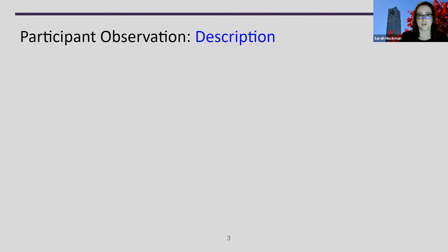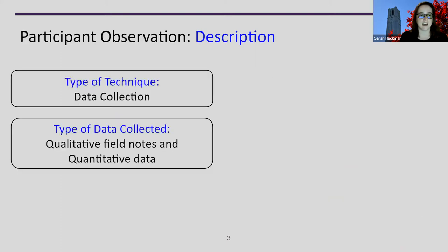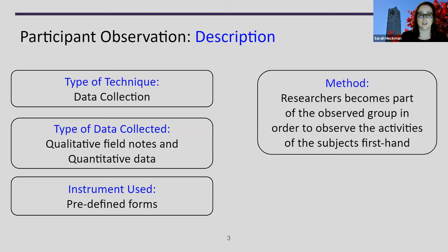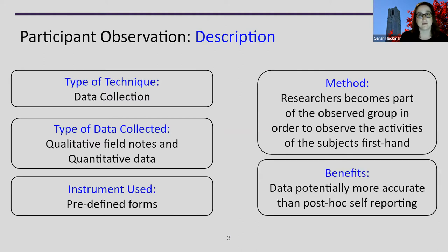We'll start first with participant observation, which is a type of data collection technique where we can collect qualitative field notes and quantitative data. We can use predefined forms to help us with participant observation. Participant observation is when the researcher becomes part of the observed group and can observe the activities that participants are doing firsthand. The benefit is we can get more accurate data than compared to post hoc self-reporting, which can be typically unreliable.